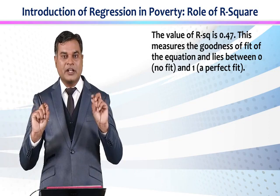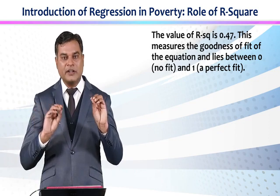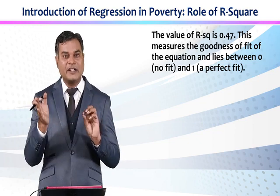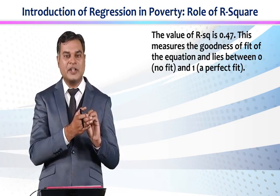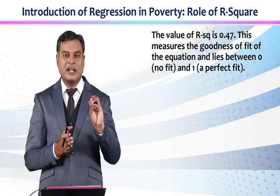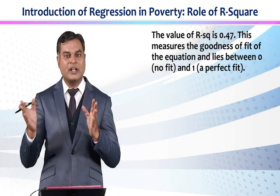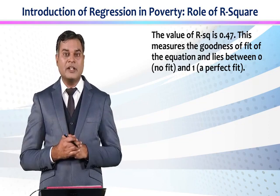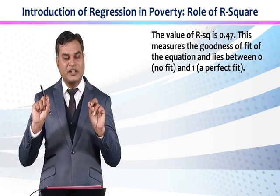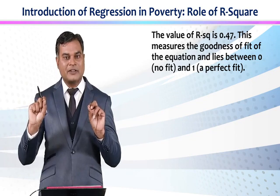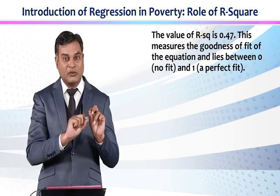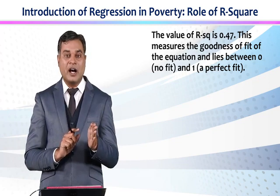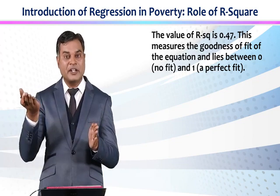0 means that 0% of information is being transferred from the independent variable to the dependent variable — 0% change in the dependent variable is due to the independent variable. It means the variable we are using could be completely irrelevant. And 1 means that 100% changes in the independent variable trickle down into the dependent variable — 100% changes in the dependent variable are determined by the independent variable.